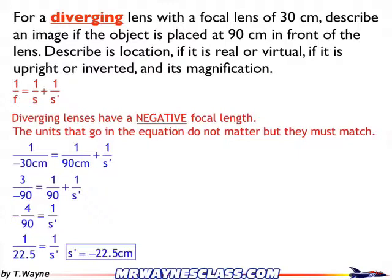The most common mistake is at the step where you have negative 4 over 90 — a lot of people just set that equal to s prime. But remember, it's the inverse of s prime, so you must flip it. Therefore s prime is negative 22.5 centimeters.